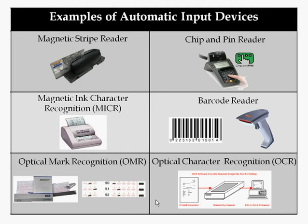OCR — optical character recognition — is where a scanner will scan a printed document and recognise the text in it. It will scan a letter and look up possible matches in a database for that letter. It converts the letter into a bitmap first, uses that bitmap information to search a database to look for letters, and basically digitises hard copy text. So it turns any text that's on paper into an electronic format, so you could edit it in a word processor, for example.